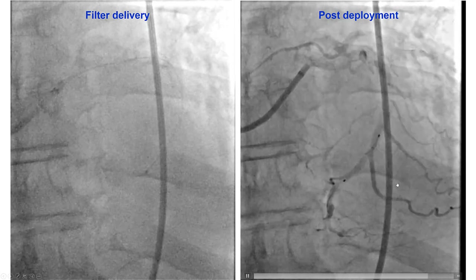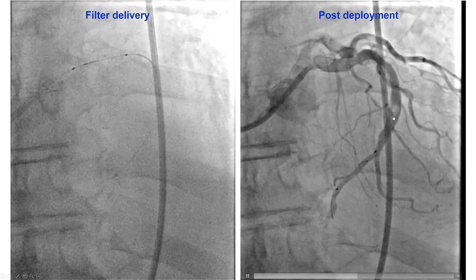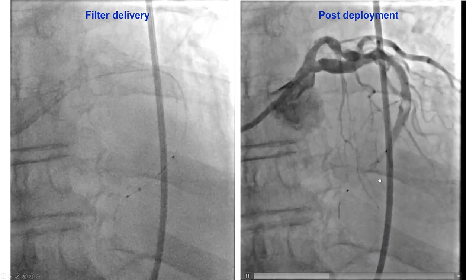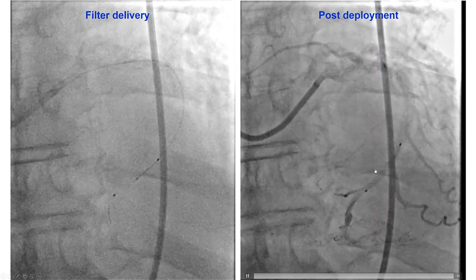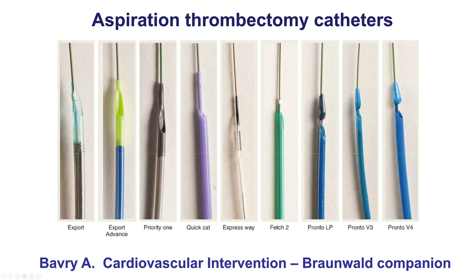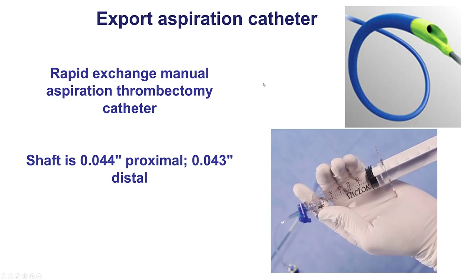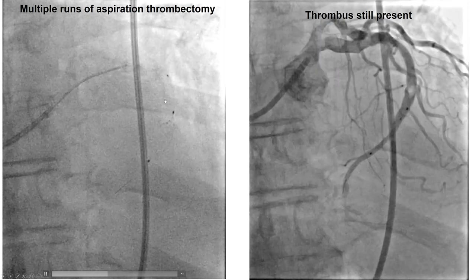One of the challenges here is we have a major branch coming close to the target lesion, so there is not enough space to park the filter and protect both branches. Nevertheless, at least we have protection of the larger distal circumflex branch. The next question is how to remove the thrombus, and we decided to do aspiration thrombectomy. There are various catheters to perform aspiration thrombectomy, including the Export, Priority One, QuickCat, Expressway, Fetch 2, Pronto LP, Pronto V3, and Pronto V4. It is important to have at least one or two of those catheters in the lab to use when large thrombus is present. In this case, we decided to use the Export catheter, which has a syringe creating vacuum, and we did multiple passes with the Export.